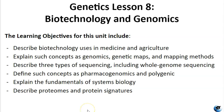The learning objectives for this unit include describing biotechnology uses in medicine and agriculture. We'll talk about genomics, genetic maps, and mapping methods. We'll be describing three types of sequencing including whole genome sequencing and pharmacogenomics and systems biology. And finally we'll describe proteomes and protein signatures.